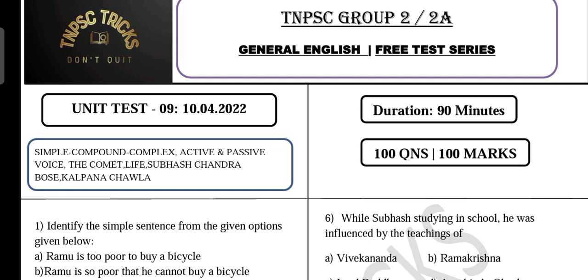In Unit Test 9, we are covering 6 topics. Part A: Grammar — Simple, Compound, and Complex Sentences, and Active and Passive Voice. Part B: Poetry — The Comet and the Life Indra poem.